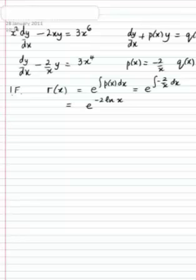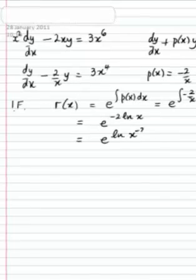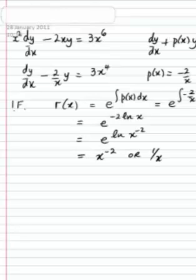Now, using the laws of logarithms, the minus 2 can go inside as a power. Which is e to the log x to the minus 2. And then the exponential and log cancel each other out. And we're just left with x to the minus 2 or 1 over x squared as the integrating factor.